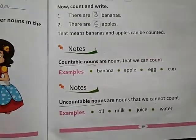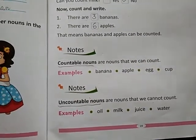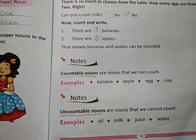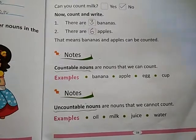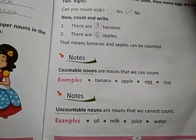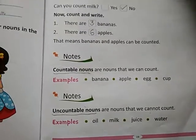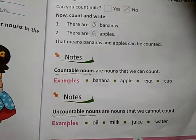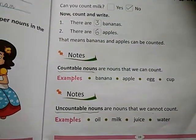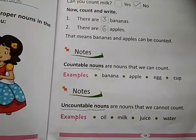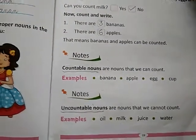You can count the number — like 3 pencils. Uncountable nouns are nouns that we cannot count. Like oil — you can count the bottle of oil but you cannot count the oil itself. Milk — you can count the bottle of water, but the juice and water themselves — so uncountable nouns cannot be counted.